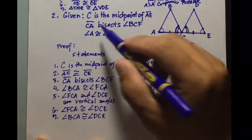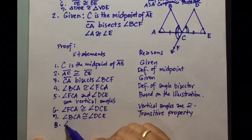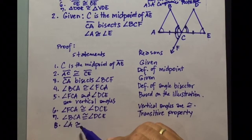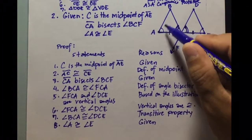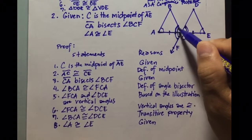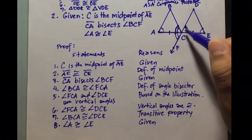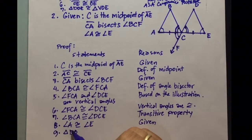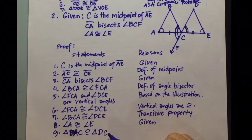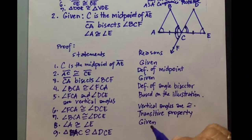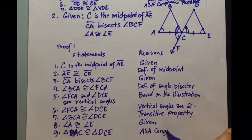Our last given, statement number 8, is that angle A is congruent to angle E — reason: given. So we have angle, side, angle proven, meaning triangle BAC is congruent to triangle DCE. The reason is: ASA congruence postulate.